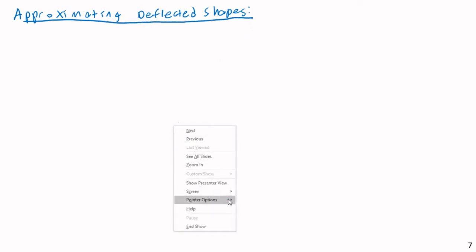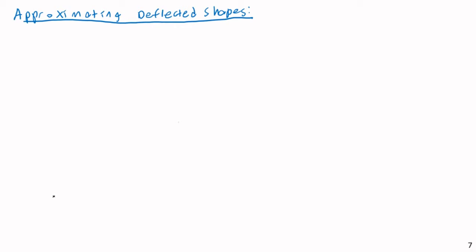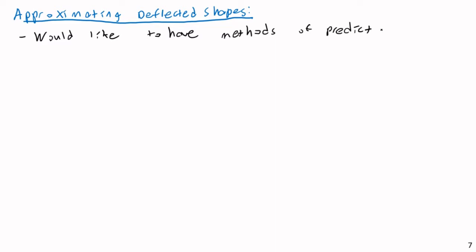It is good to have a basic knowledge of how things will deform. So if I want to know how something is going to deform — how can I do that even without doing any calculations? We would like to have methods, even without any calculation, of predicting deflected shape.